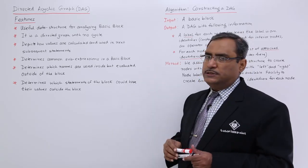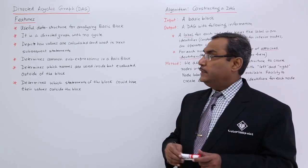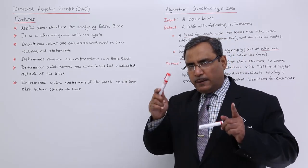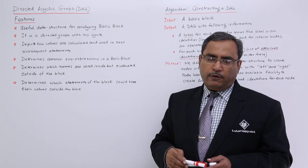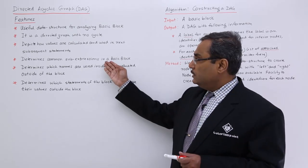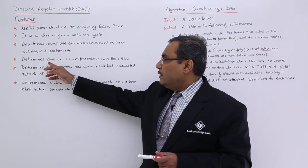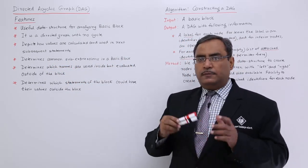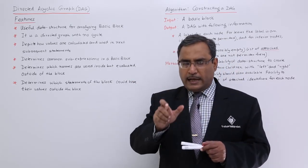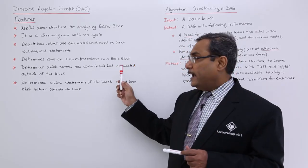Another important feature: it determines common sub-expressions in a basic block. If some statements have expressions which are common and have been used multiple times, that can be detected by this DAG. In our next video we shall show you a good example of how to draw a DAG for a sample three-address code.